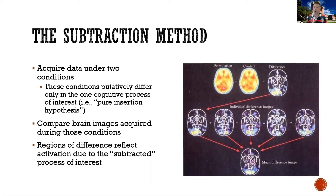You repeat this process for a number of participants. You take the difference between the condition of interest and the control condition for participant one and store it, then do the same for participant two, three, four, and five. You can then average the differences from each subject to create one group map — the average difference between the two tasks across all participants.